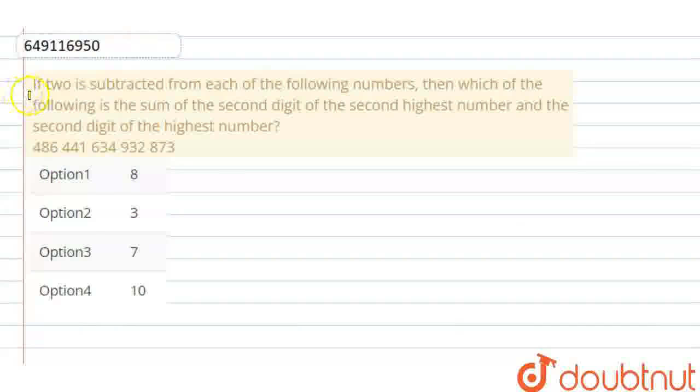Welcome to Doubtnet. Our question is, if 2 is subtracted from each of the following numbers, then which of the following is the sum of the second digit of the second highest number and the second digit of the highest number?